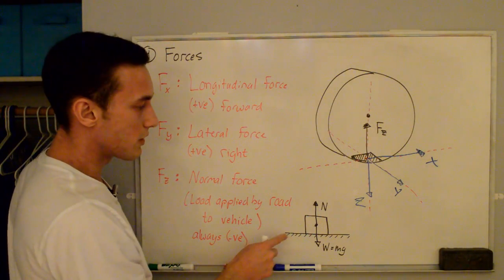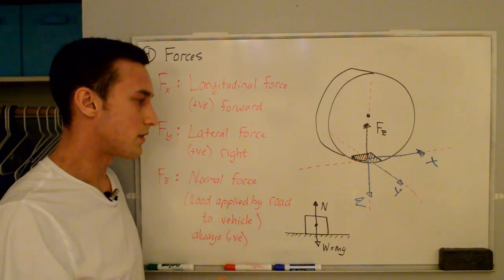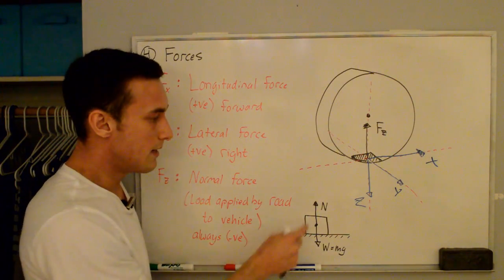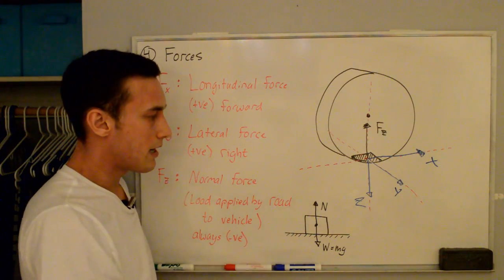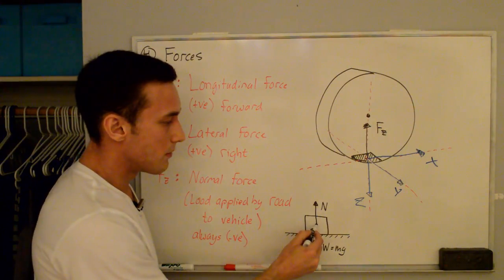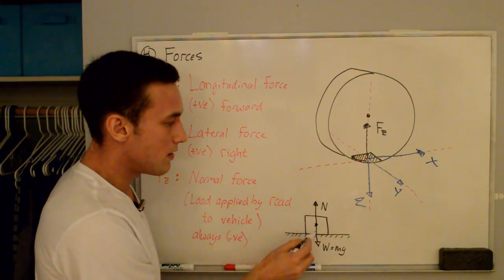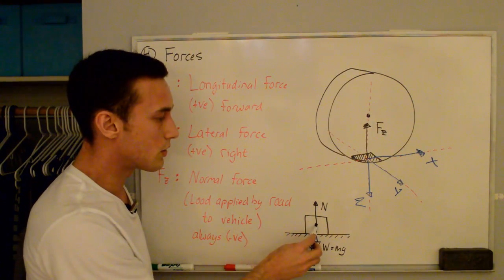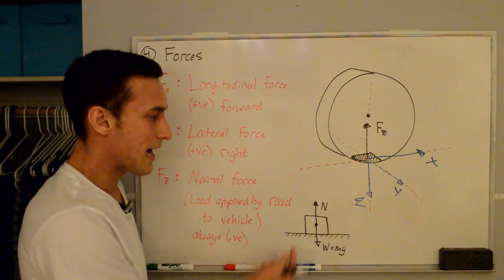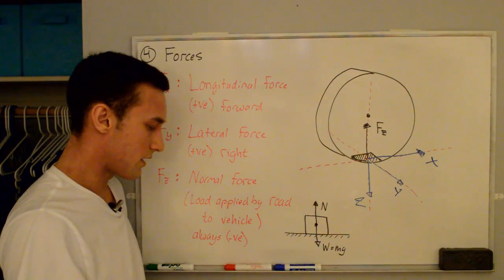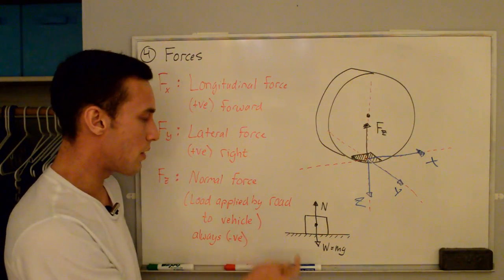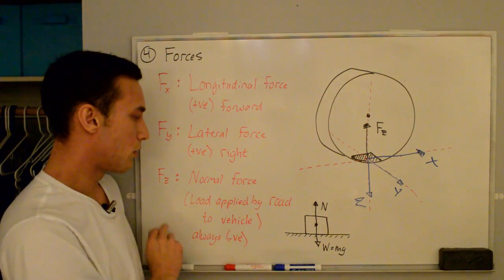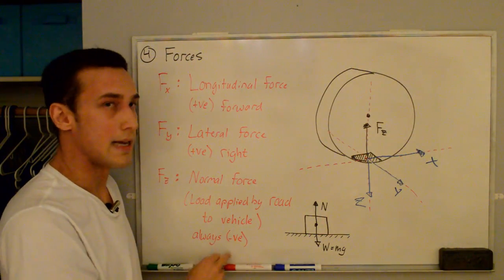This might make more sense if you look at a free body diagram — just a box sitting on the ground. When you draw the free body diagram from the center of gravity, the weight MG acts downward, and you always draw the normal force acting upward because it's the load applied by the ground to the box. That's why your normal force will always be negative in this system.